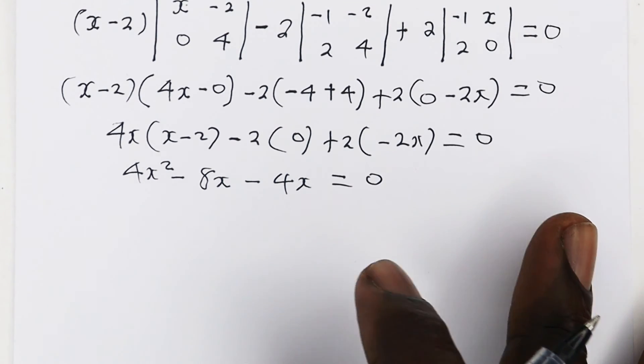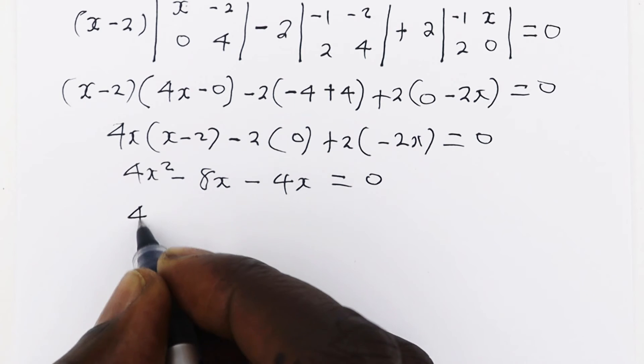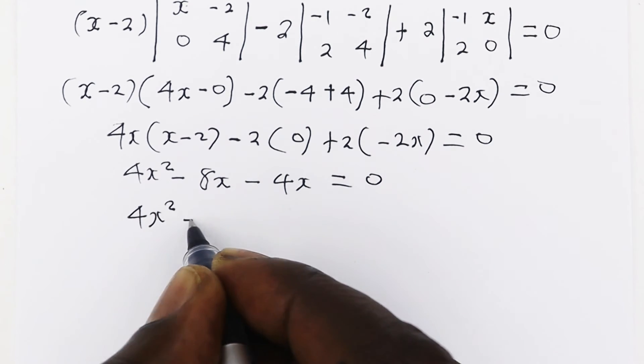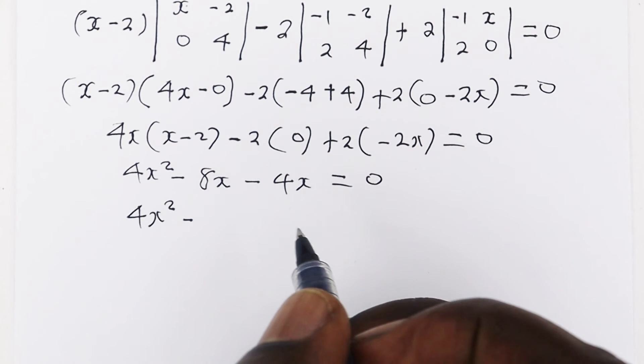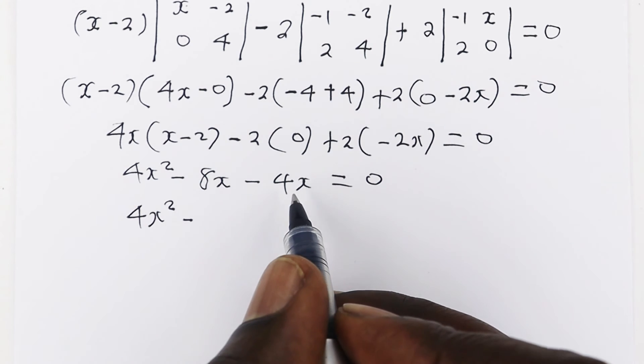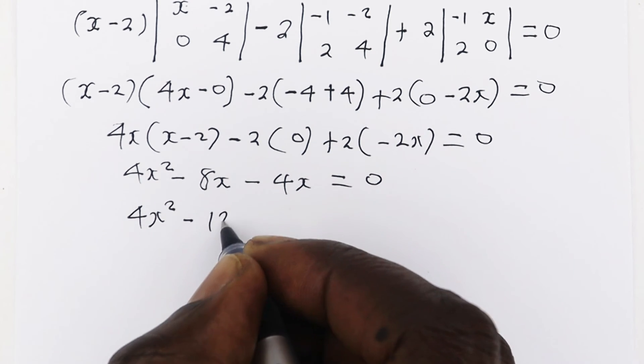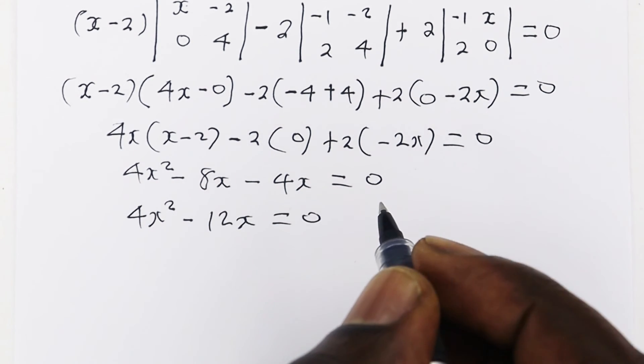Let us simplify this further. We are going to have 4x squared minus 8x minus 4x, that is 12x, is equal to 0.